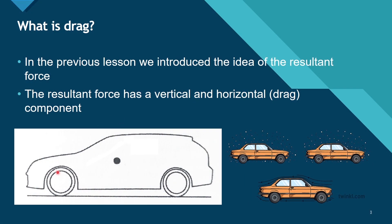First of all, what is drag? In the previous lesson we learned about the resultant force that comes from all of the forces that act on the vehicle body due to it going through a fluid — in our case, air. We reduced all of those forces to one resultant aerodynamic force acting at an angle compared to the horizontal axis. This means we have both a horizontal component and a vertical component. The horizontal component Fd is the air drag we will discuss in this lesson, and the vertical component is the force of lift, which we will cover in the next lesson.